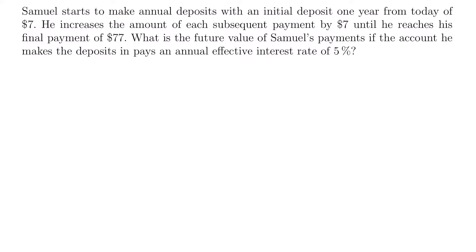We know we're looking for the future value and that we're looking at an arithmetic increasing annuity because payments are increasing by $7. Now we just need to know: are we looking at an annuity immediate or an annuity due? An annuity due is where the first payment is made today, and an annuity immediate is where it starts one year from today. Our problem says the initial deposit is one year from today, so we're working with an annuity immediate.